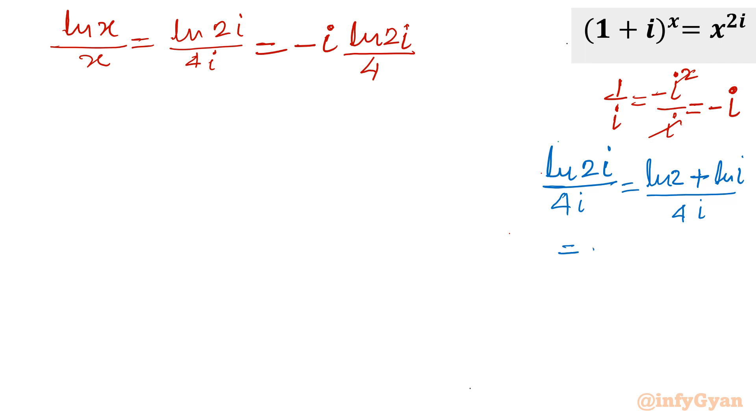Now I will write ln 2 as it is. ln i using Euler's identity, this would be cos theta plus i sine theta. So i can be written as e raised to the power i pi by 2. You can see cos pi by 2 plus i sine pi by 2. In place of theta we will write pi by 2.